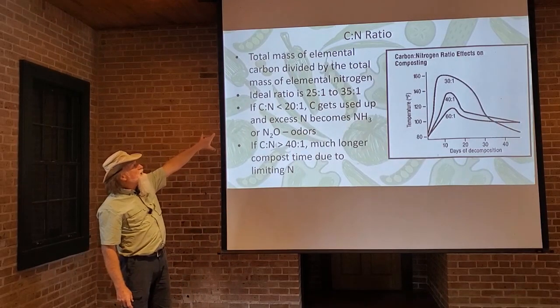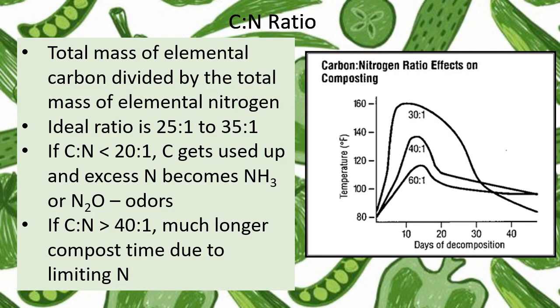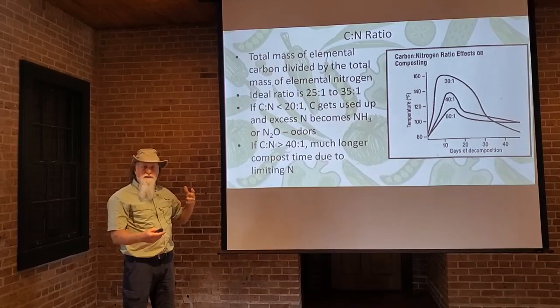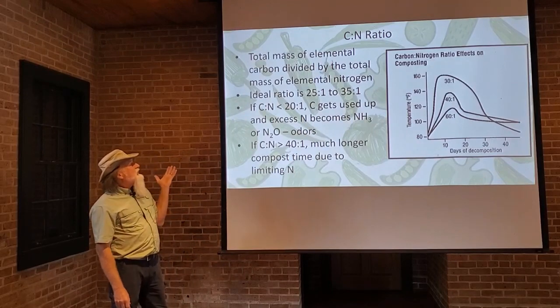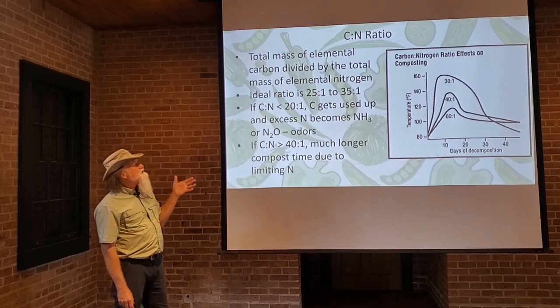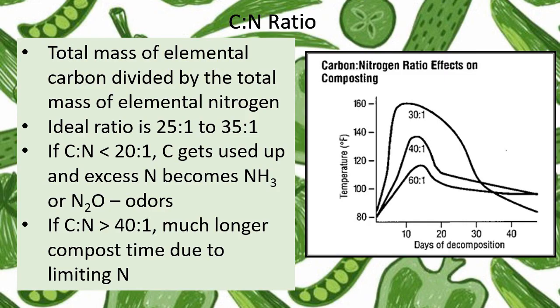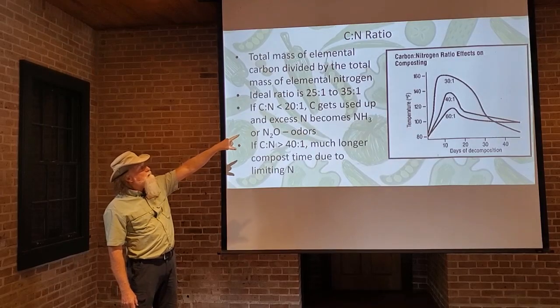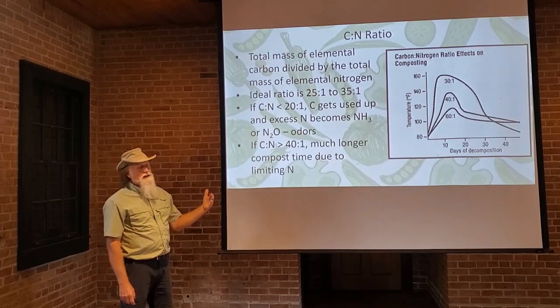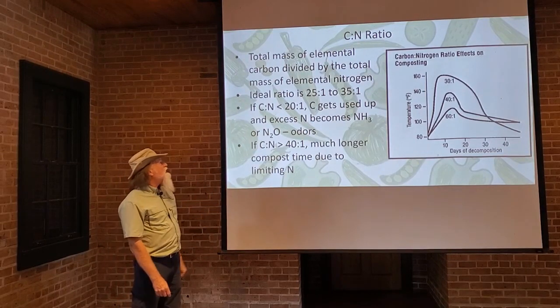The carbon-nitrogen ratio is essentially the total mass of elemental carbon divided by the total mass of elemental nitrogen. The ideal ratio is 25:1 to 35:1. At 25:1, it's probably going to heat up a little more and break down faster. At 35:1, you're still getting hot and breaking down rapidly.